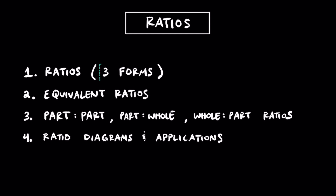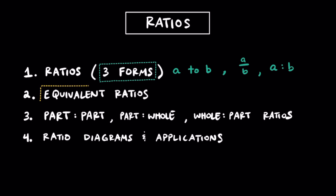We'll talk about the three forms of ratios, which we can write as A to B with words, A to B as a fraction, and A to B with a colon. I'll also talk about equivalent ratios and how we can write them.